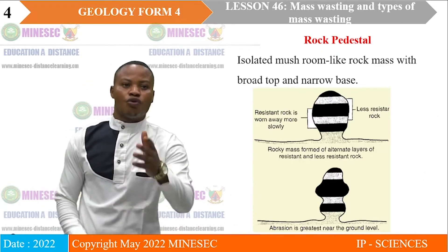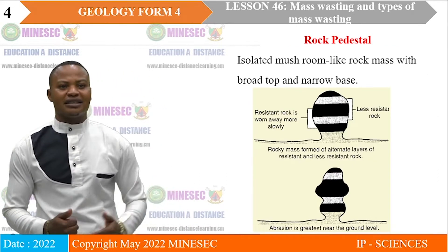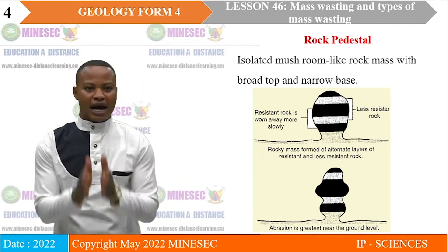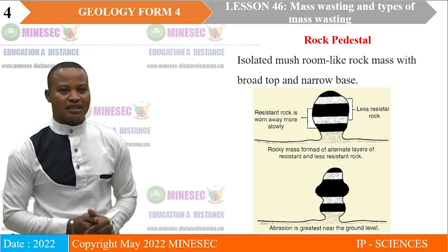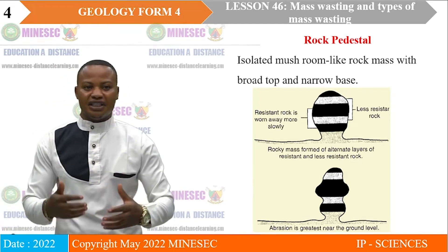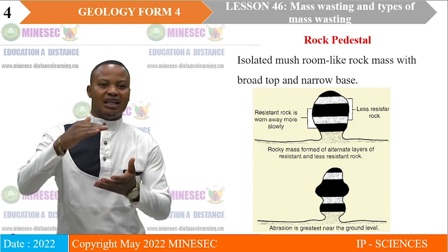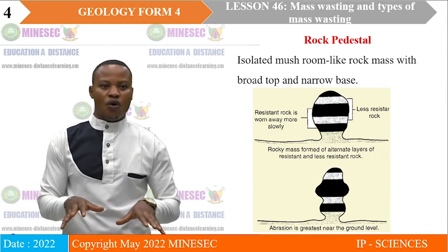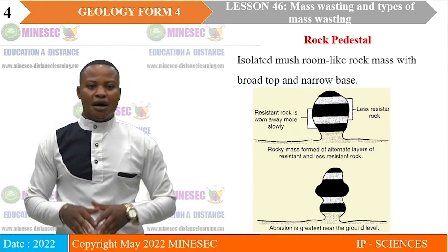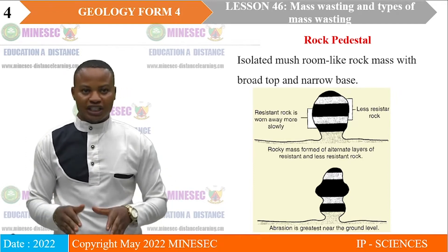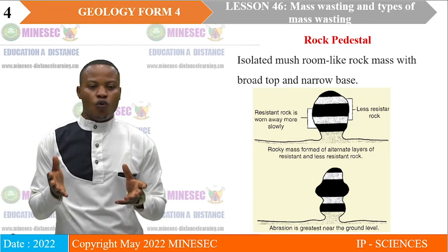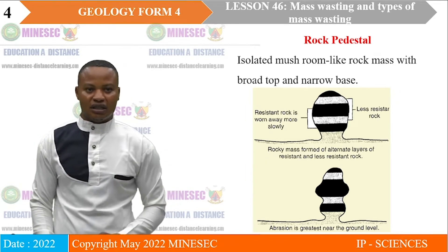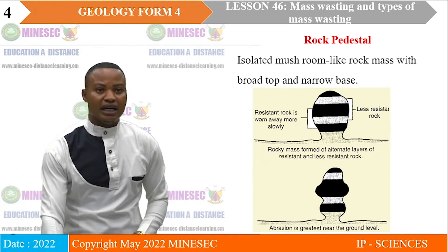Next, we have rock pedestals. Rock pedestals are isolated mushroom-shaped rock masses with a rounded top and a narrow or standing base. They are formed as a result of differential weathering, where rocks are arranged in layers of resistant and less resistant rocks horizontally, and materials transported by saltation and surface rolling weather the bases of these rocks faster than the tops, leaving them standing as mushroom-shaped structures.